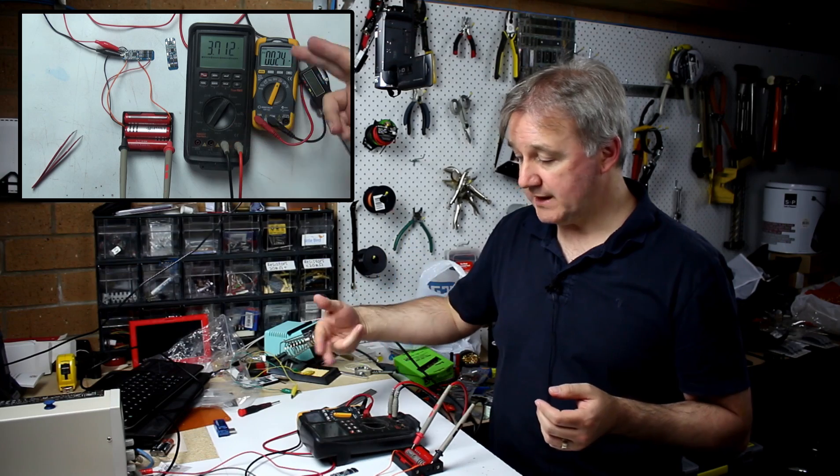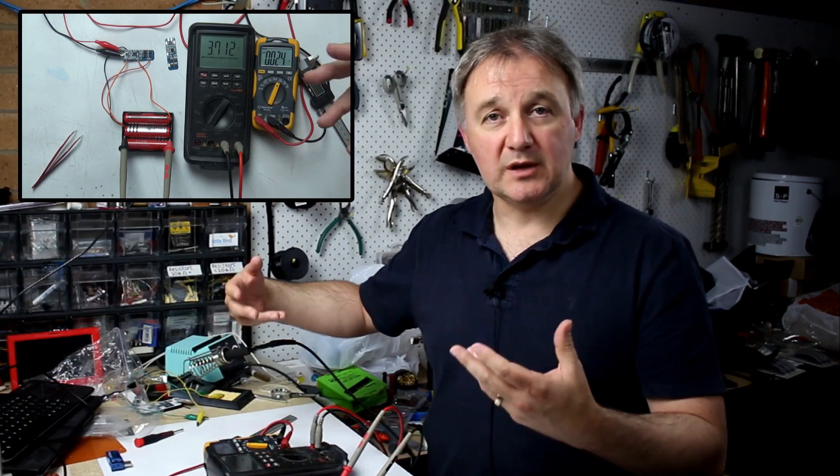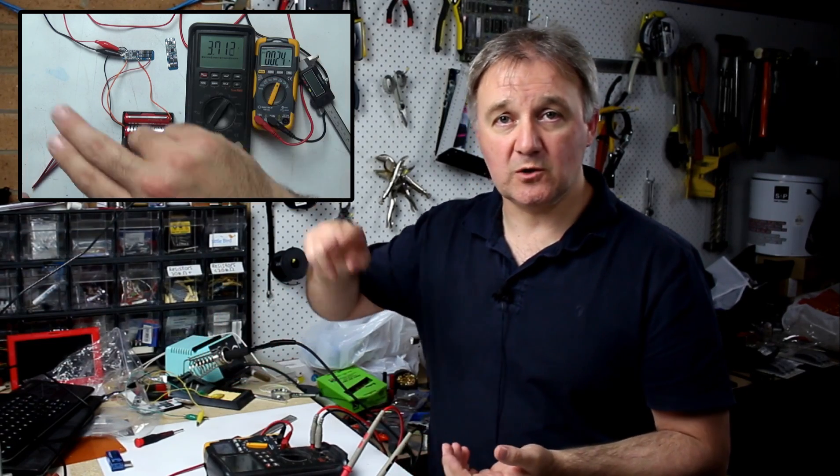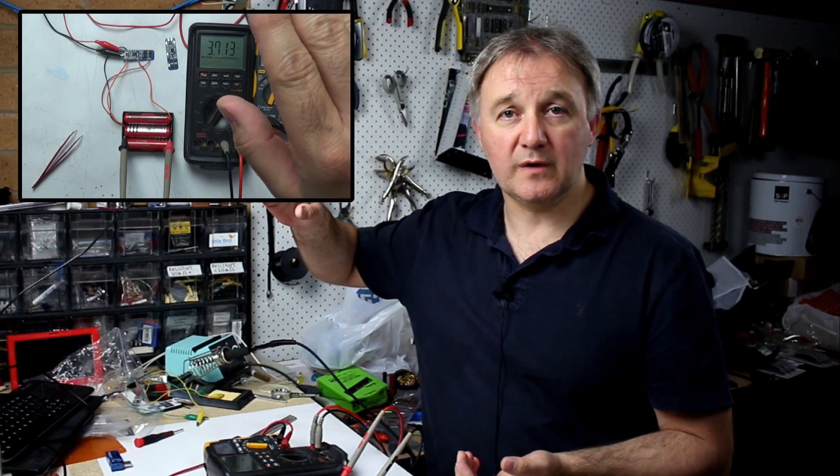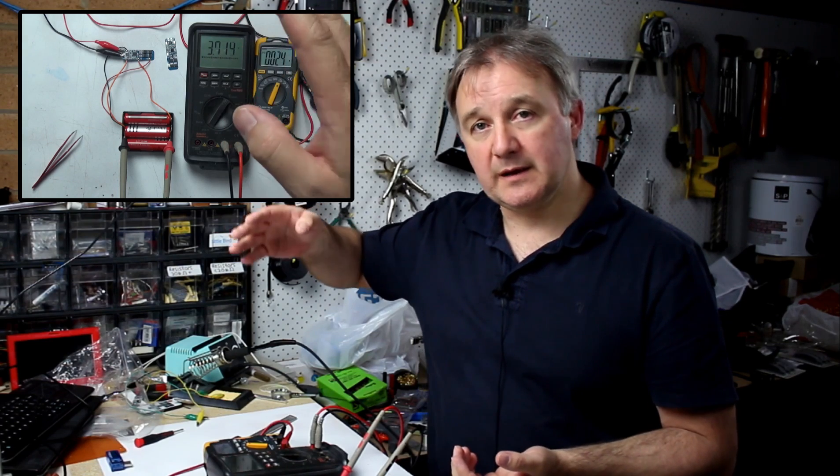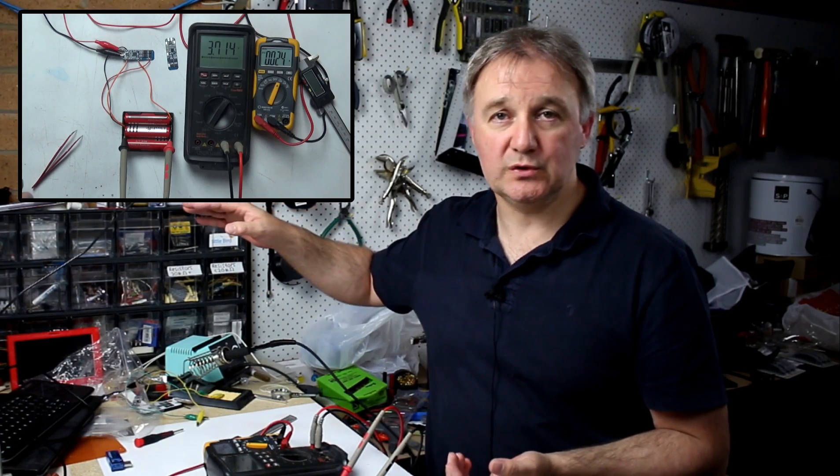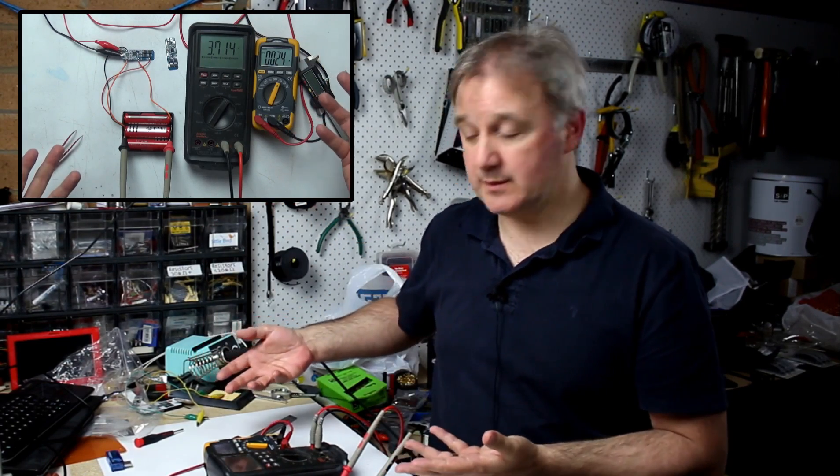So let's simulate what actually happens here now. Remember the proper charging methodology for the 18650s is constant current, ramping up the voltage until it hits 4.2 volts and then allowing that current to drop off but maintaining the 4.2 volts. Obviously we won't really be achieving that here. So let's take a look what happens.